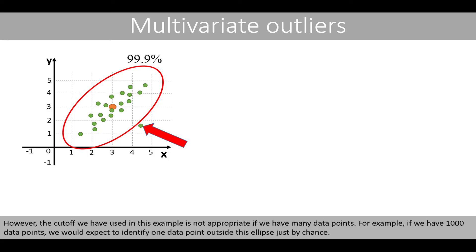However, the cutoff we used in this example is not appropriate if we have many data points. For example, if we have 1000 data points, we would expect to identify one data point outside this ellipse just by chance.